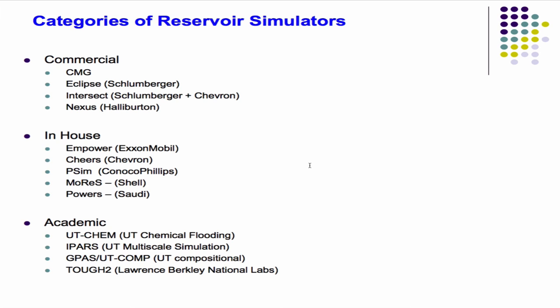Then you have your in-house simulators. Basically every super major, every major service company that has a research department is going to have their own in-house simulators — even the ones that also use commercial ones. Like Chevron has Cheers internally, and they also have Intersect as a product they sell. A lot of the in-house simulators include proprietary data sets built right into the code, which is a big reason they're not released.